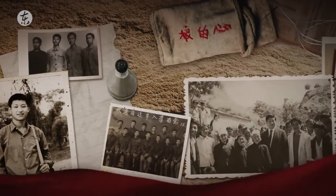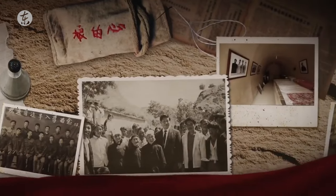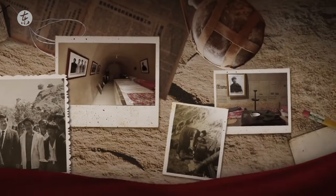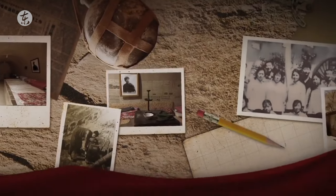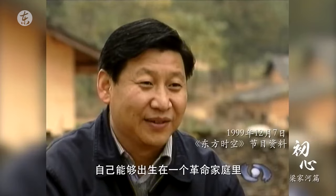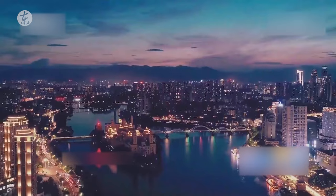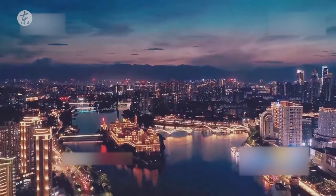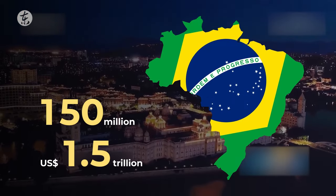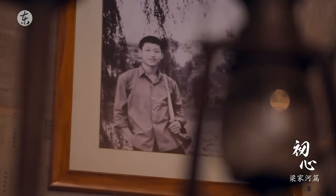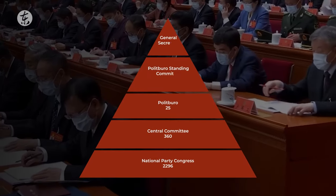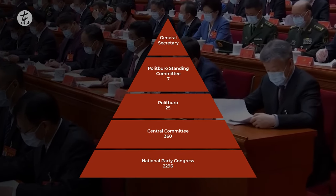President Xi Jinping started as village secretary and was elected to the Politburo after having governed regions, including two provinces, totaling 150 million people, with a GDP of 1.5 trillion dollars. It's almost like governing Brazil, and it took 30 years. As you can see, the party has a highly meritocratic structure.